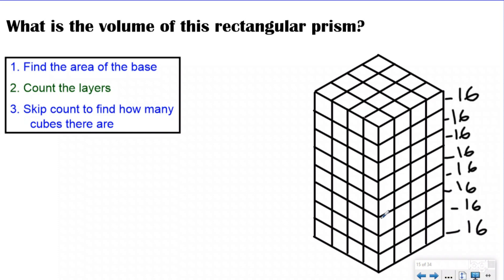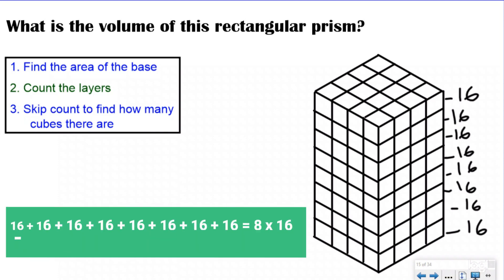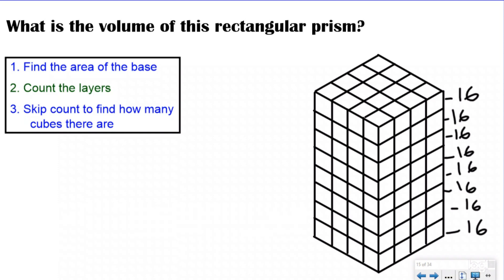Then we count our layers: 1, 2, 3, 4, 5, 6, 7, 8. If we had 8 layers of 16, we would skip count to find the total. So really what we were doing is using repeated addition to solve for this rectangular prism. We know that repeated addition is really just multiplication. So instead of following those three steps and skip counting, we could write it as a multiplication equation using the times sign to say 'groups of' — just like in third grade when we drew circles and grouped them together.